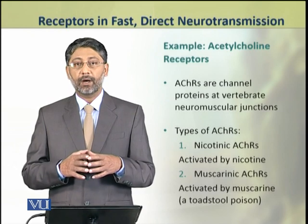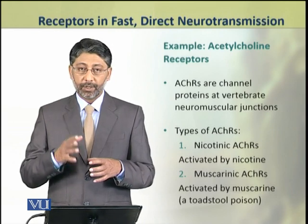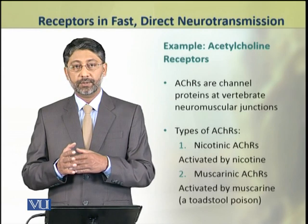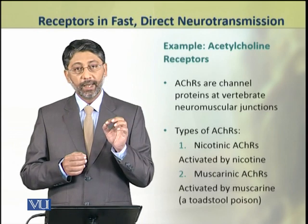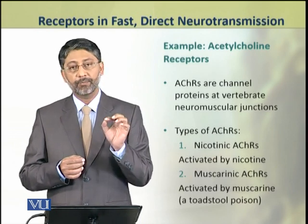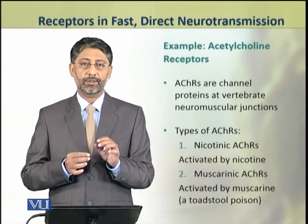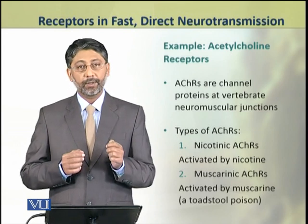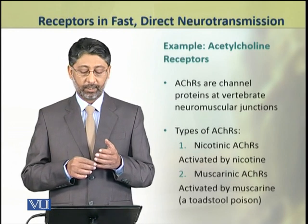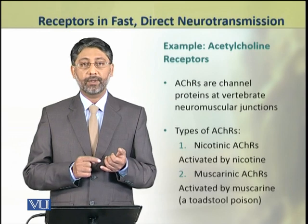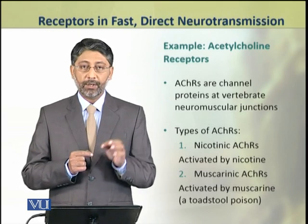We shall take an example of acetylcholine receptors to explain the functioning of such receptors which are involved in fast and direct neurotransmission. The acetylcholine receptors are channel proteins; they are found at the neuromuscular junctions of vertebrates. There are two types of acetylcholine receptors in the body. The first are called the nicotinic acetylcholine receptors, which are also activated by nicotine in addition to the actual substrate acetylcholine.